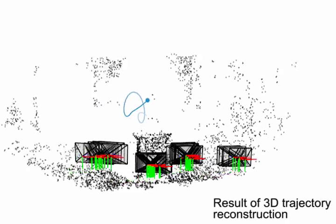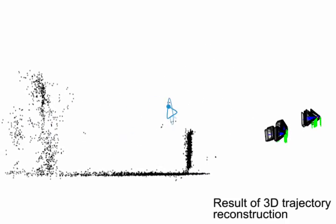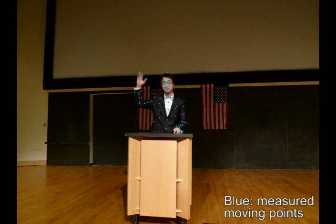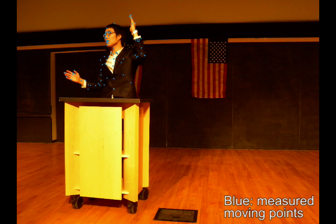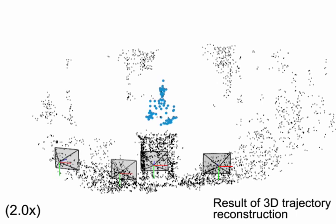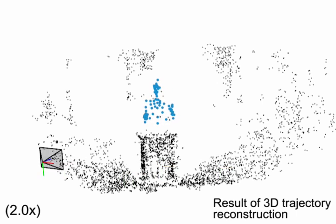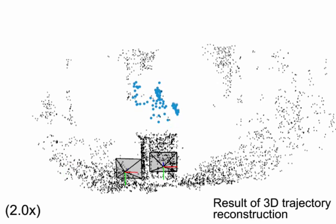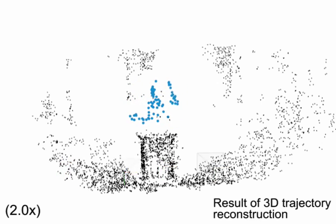For details, please see the paper. We now show reconstruction of moving 3D points from a photo collection. A part of input photos from the speech dataset. The result of 3D dynamic structure reconstruction. We use discrete cosine transform as a linear trajectory basis.